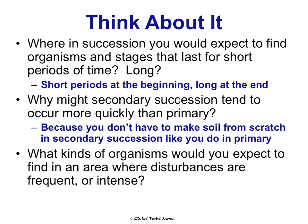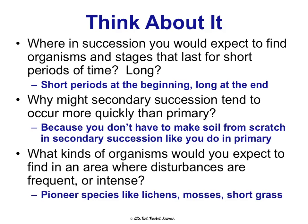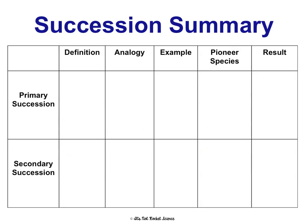What kind of organisms would you expect to find in an area where disturbances are frequent or intense — places regularly hit by tornadoes, forest fires, or hurricanes? You're going to see a lot of pioneer species and a lot of smaller organisms, not 300-year-old oak trees. So pause and take a second and try to fill in this chart, and then you can see the answers.